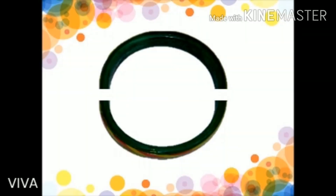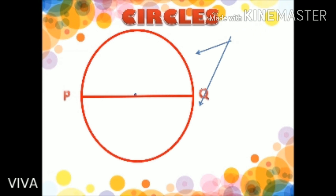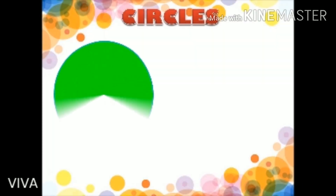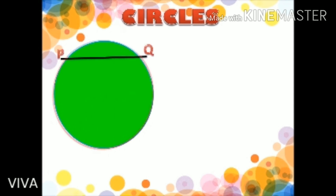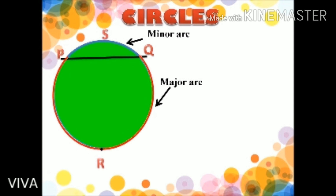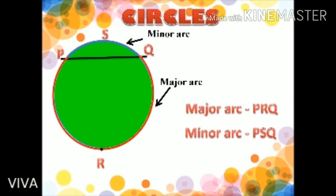Here is another bangle of Gracie which broke — it has broken into two equal parts. The two arcs formed are thus equal. To name an arc we need to add two more points on the circle: one on the minor arc and one on the major arc. Here, arc PRQ is the major arc and arc PSQ is the minor arc.